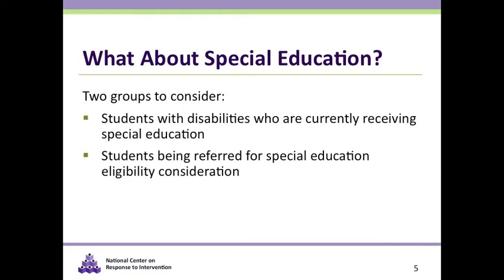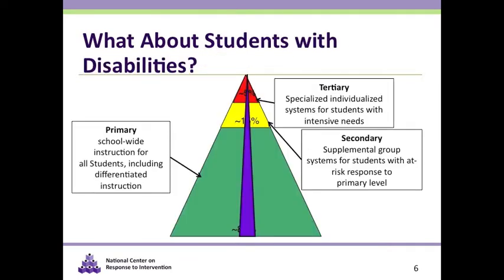Regarding special education, there are two groups to consider: students who are already identified and currently eligible for and receiving special education, and students being referred for special education eligibility consideration. For students who are currently classified, although the design of the RTI model is up to the state education agency or in some instances an LEA, it is recommended that special education staff and students with disabilities are included in the development and implementation of the multi-level system. In this model, students with disabilities continue to receive access to core curriculum through accommodations, differentiated instruction, and other support. Depending on the services outlined in the IEP, students may receive ongoing secondary or intensive individualized services delivered by a special education teacher.